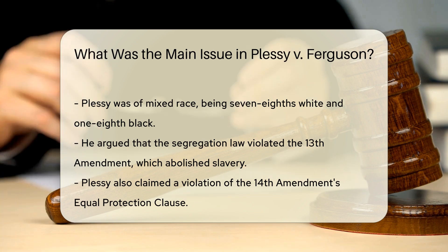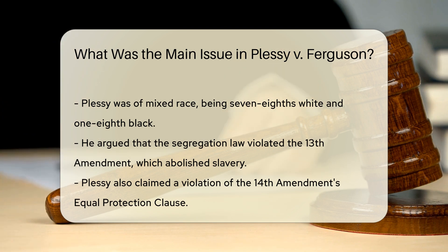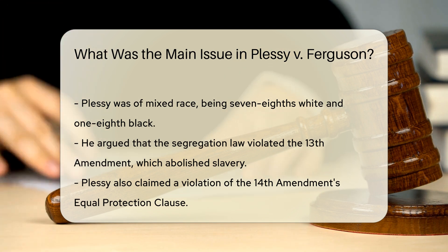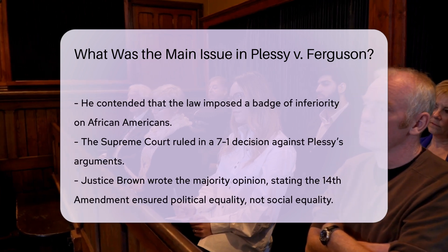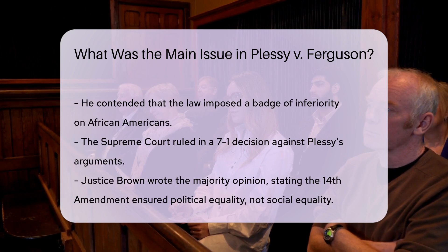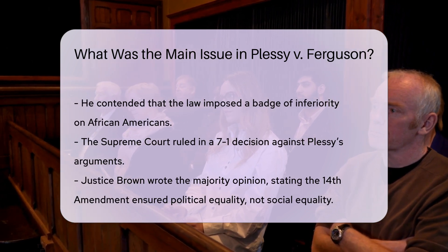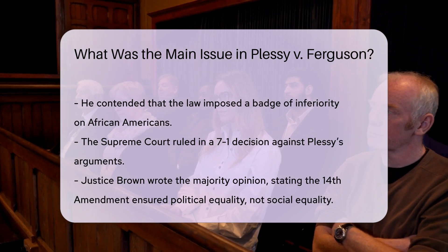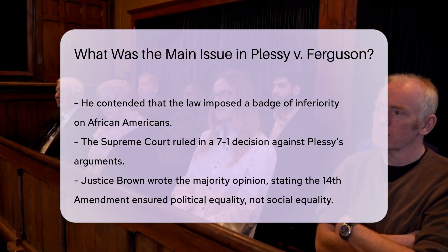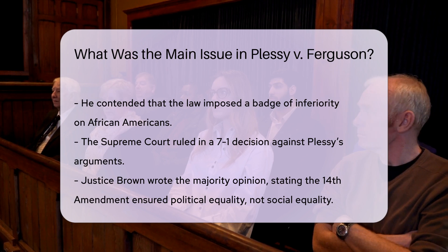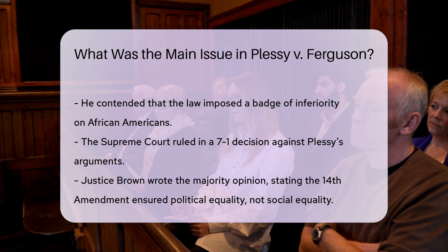The Supreme Court, in a 7-1 decision, rejected Plessy's arguments. The majority opinion, written by Justice Brown, held that the 14th Amendment was designed to establish political equality but not social equality. The court reasoned that as long as the facilities provided for both races were equal, the law did not violate the Constitution. They also dismissed the idea that the law implied black inferiority, suggesting that any such interpretation was a personal choice of the colored race.